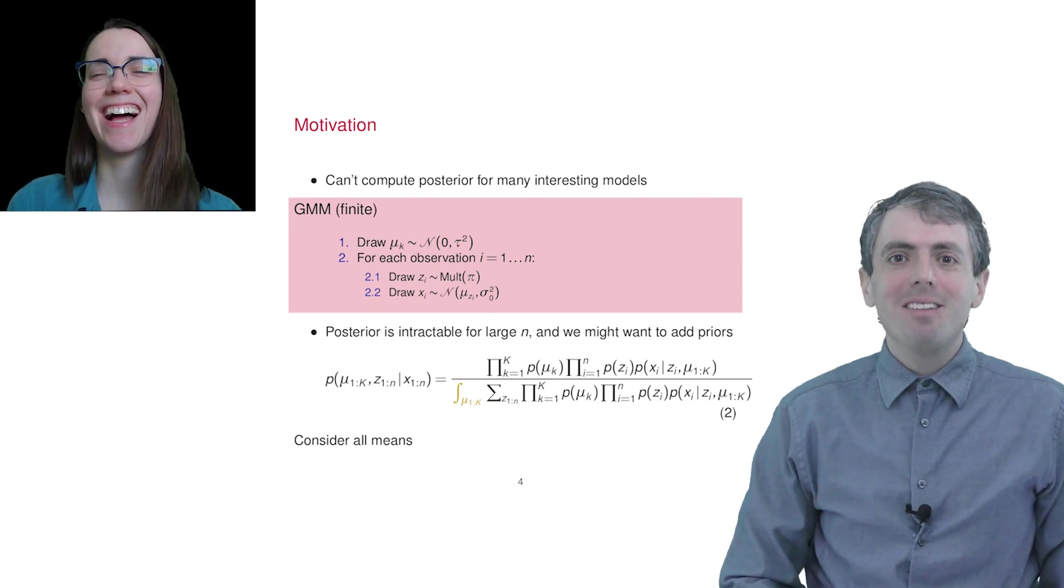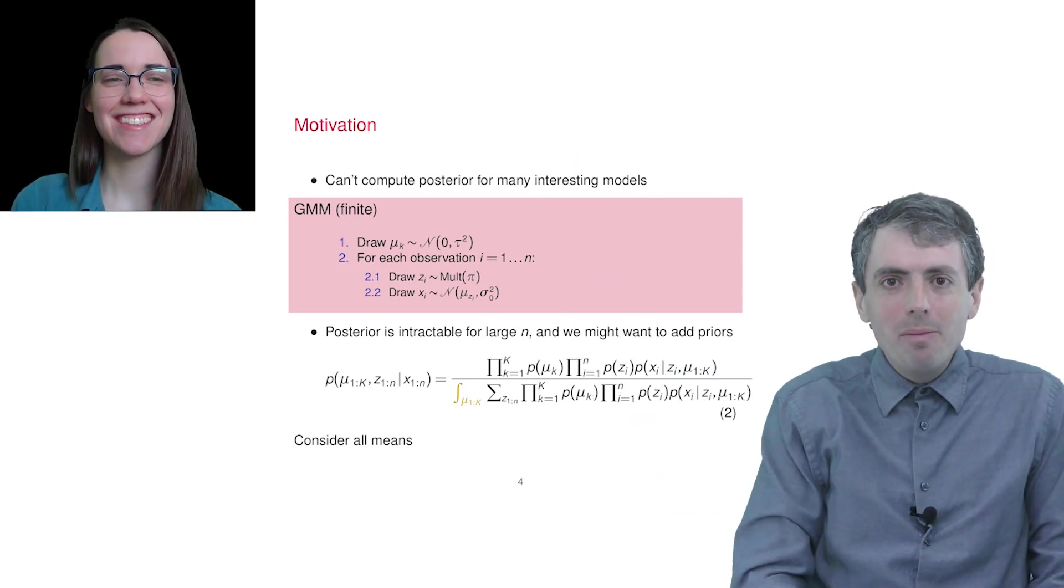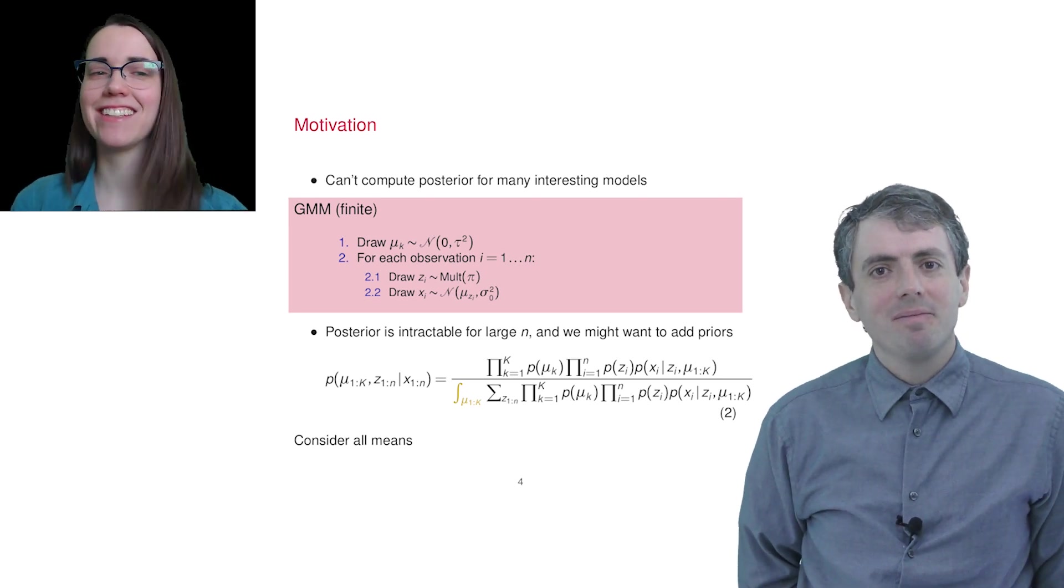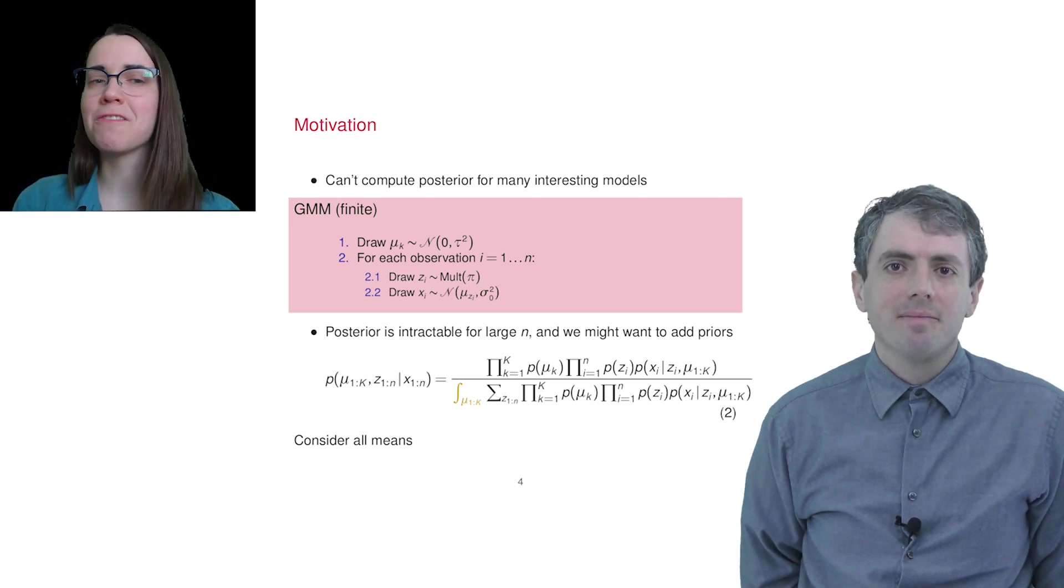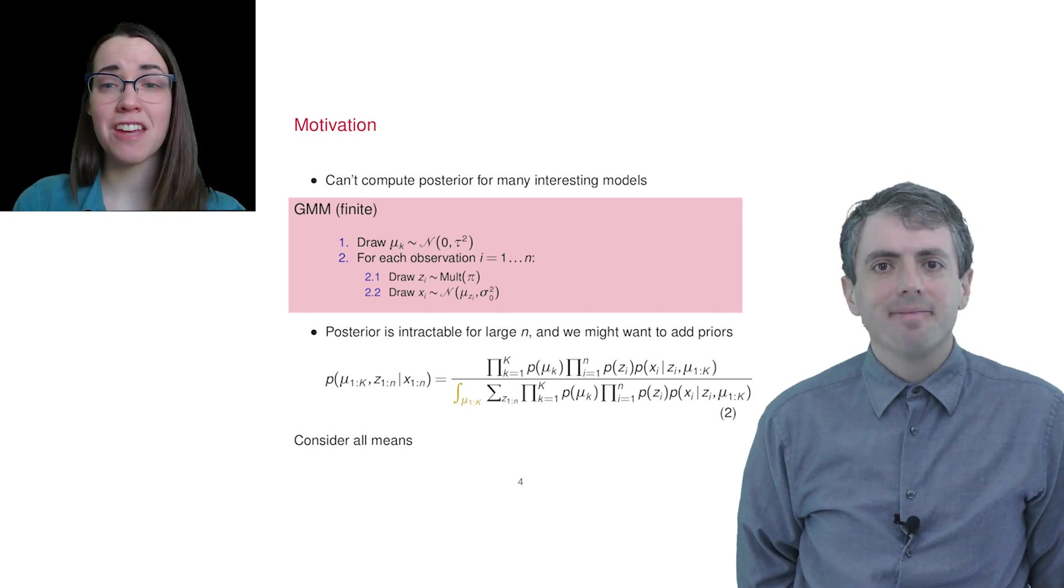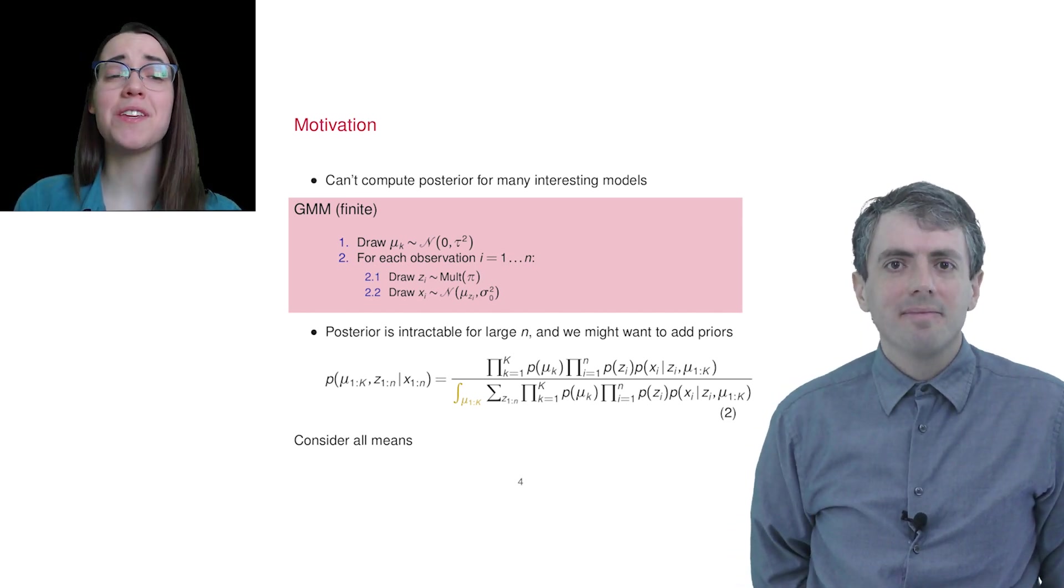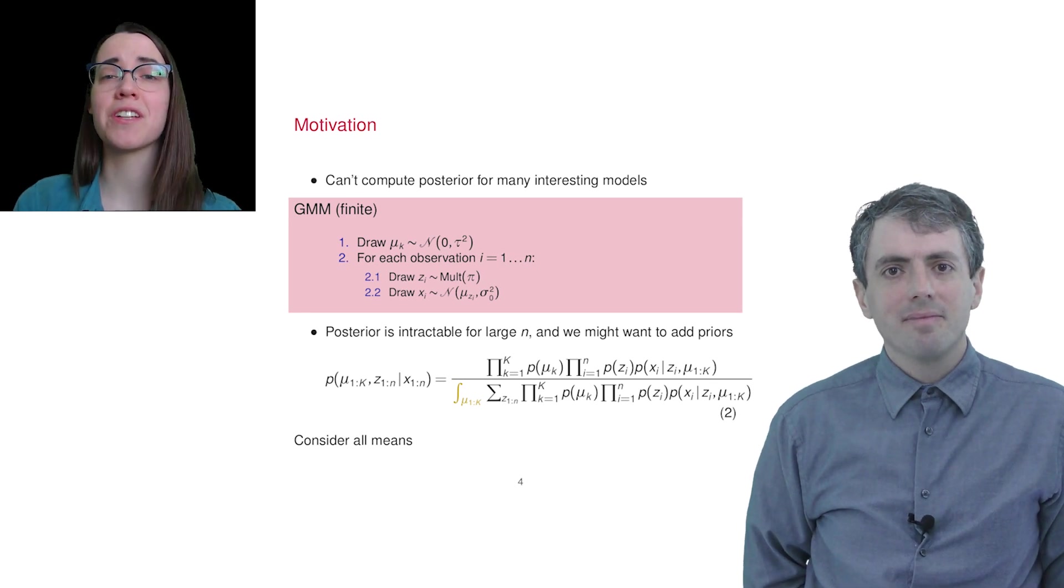But you just wrote down the distribution. There it is. What do you mean it's intractable? Just because you can write down something doesn't mean you can calculate it. The sum and the integral over all the possible means and cluster assignments is really computationally expensive. Even if you have a huge computer cluster, it'd be pretty hard to compute what it is.